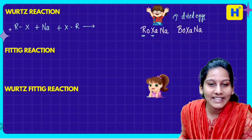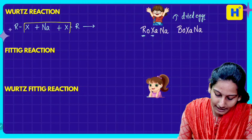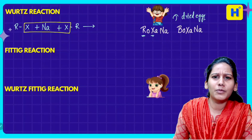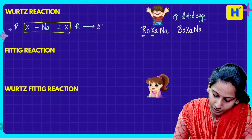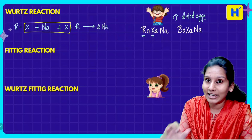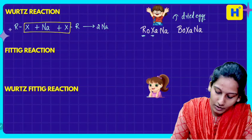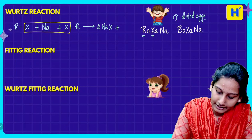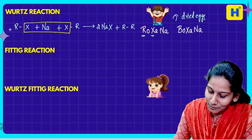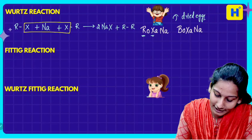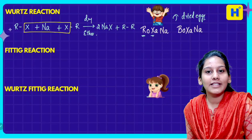So now we have to understand the reaction and the product. We can react with sodium — we can react the alkyl halide with sodium. Then we get 2 sodium halide. The reaction is balanced. The reaction is easy: we have two sodium halide, and then we form an alkane group. That is the Wurtz reaction. I am going to put a dried egg — that is nothing but dry ether.